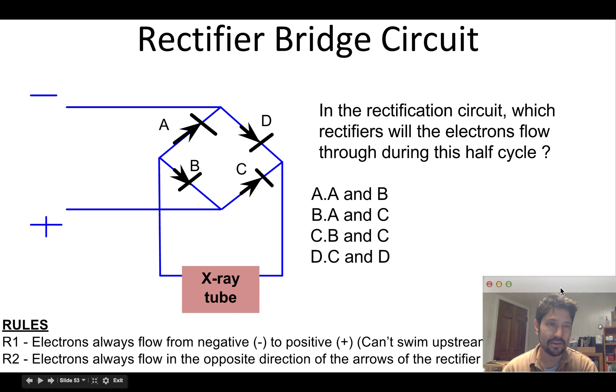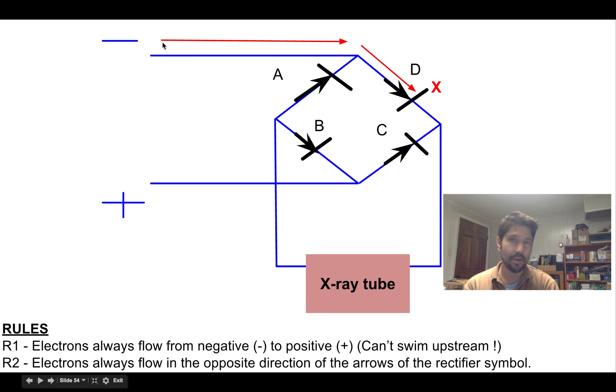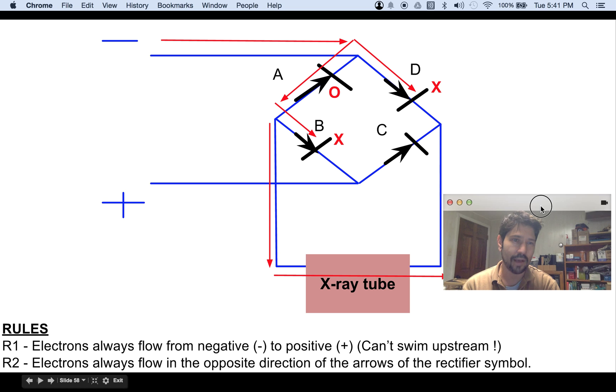All right, so that's how you would do those two problems. The other way you might get this problem is reformatted this way, and they'd show you it like this. They'd say in this circuit, which rectifiers will the electrons flow through during this half cycle? So we're going to do the same thing. We're going to start up here at the most negative, at the negative sign. We'll draw our arrow, and we'll say okay, can I go through D? No, it matches, the arrows match, so I can't go through it. Can I go through A? Yes, I'm going against the arrow. Then I'll turn here. Can I go through B? Nope, those arrows match. But I can go down here, and I can go through the tube. Up, Bob's in the way. I can come up.